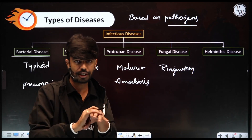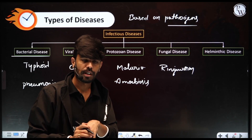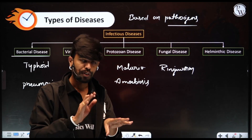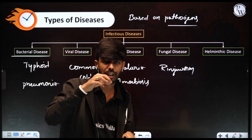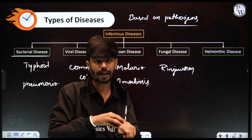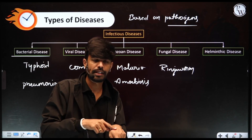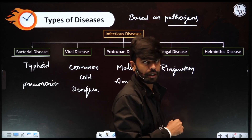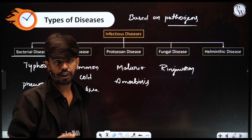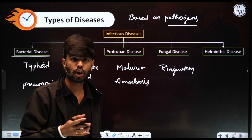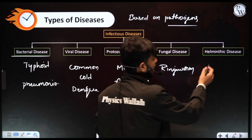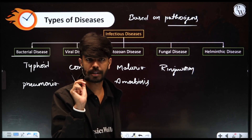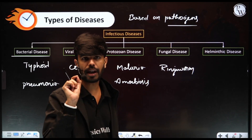Fungal diseases cause intense itching and rashes. You can observe dry scaly lesions over the scalp, nail, and skin — there is intense itching in those areas. The causative organisms include Epidermophyton, Trichophyton, and Microsporum — these are fungi. Helminthic diseases are caused by flat worms and round worms, such as Ascaris and tapeworms.